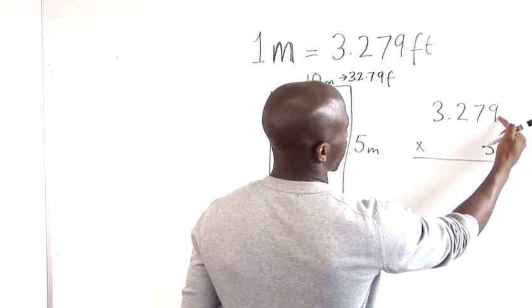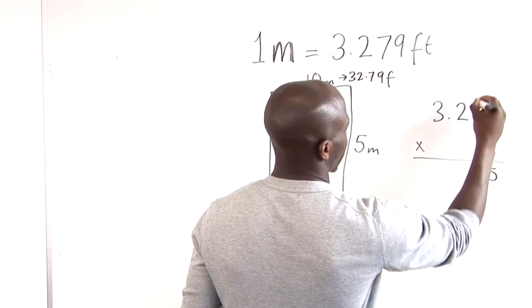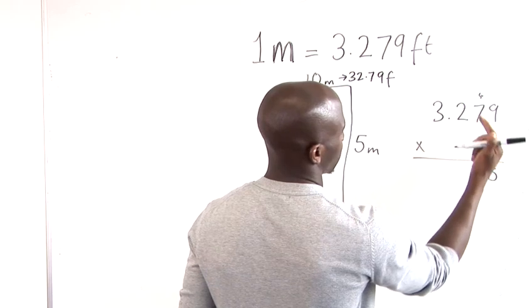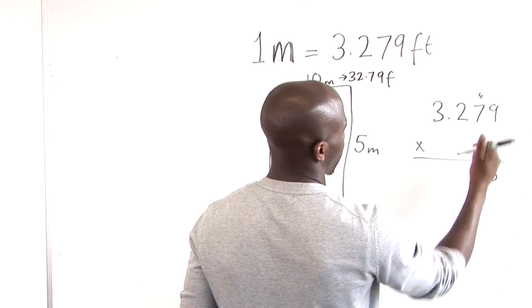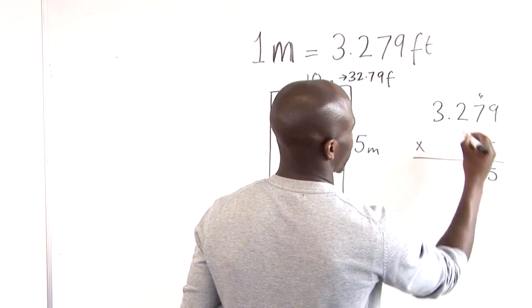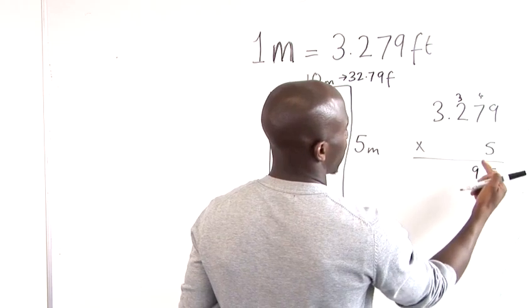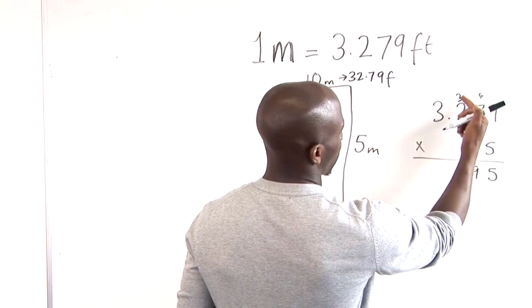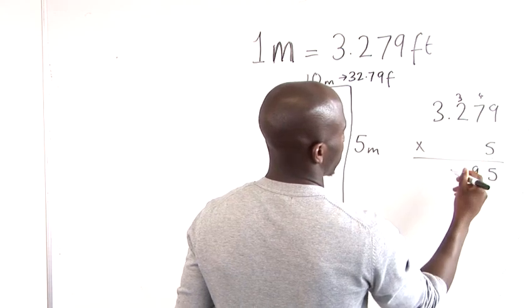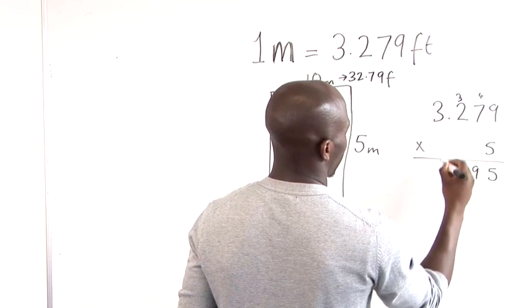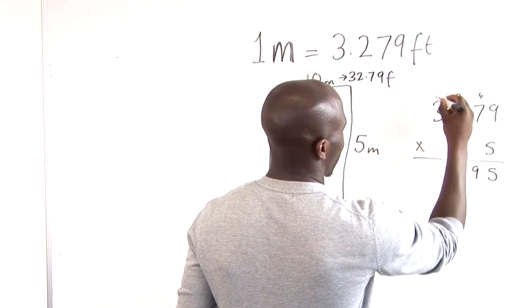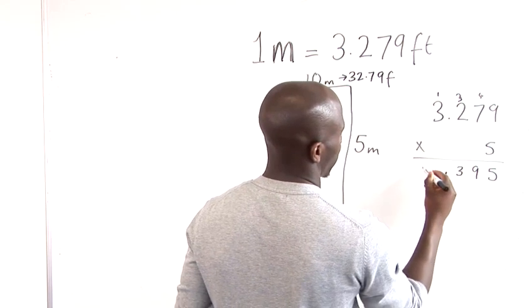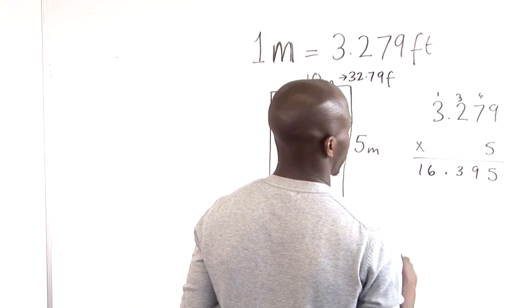Now 5 times 9, that's 45. So we put 5 there. Remember to carry the 4. 5 times 7 is 35. Add 4. That's 39. So we put the 3 there. Now 5 times 2 is 10. So we carry the 3. That's 13. And we've got a decimal point there. And we've got the 1. So 5 times 3 is 15. Carry the 1. We've got 16.